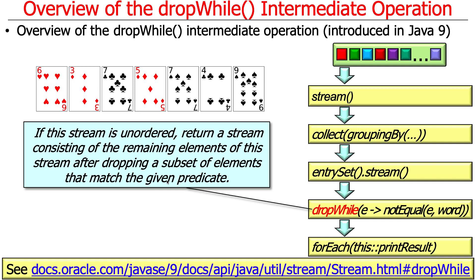There are two variants of dropWhile — the method looks the same but the main difference depends on the characteristics of the stream data coming to it. For an unordered stream, dropWhile returns a stream consisting of the remaining elements after dropping a subset of elements that match the given predicate. It drops everything that doesn't equal the condition, and when something matches, it returns the remaining elements in the stream at that point.